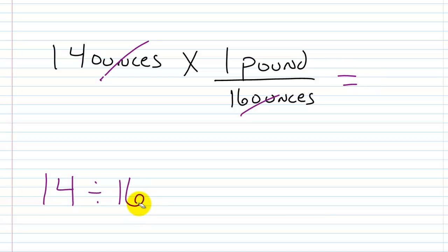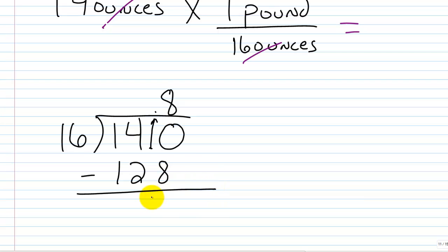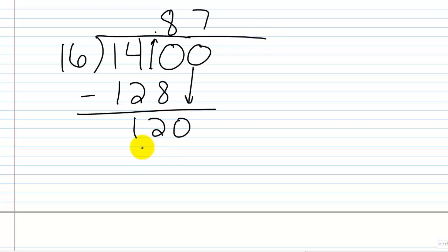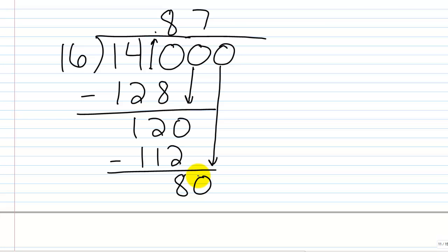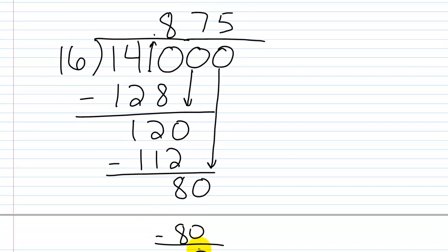We set that up in long division format: 14 divided by 16. We put a decimal point, bring it up into the answer, and add a zero. 16 goes into 140 eight times; eight times 16 is 128. Subtract to get 12. Add another zero — 16 goes into 120 seven times; seven times 16 is 112. Subtract to get 8. Add another zero — 16 goes into 80 exactly five times; five times 16 is 80. We get zero, so we end up with 0.875.